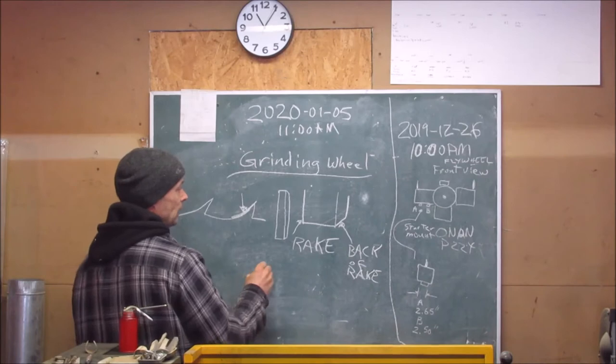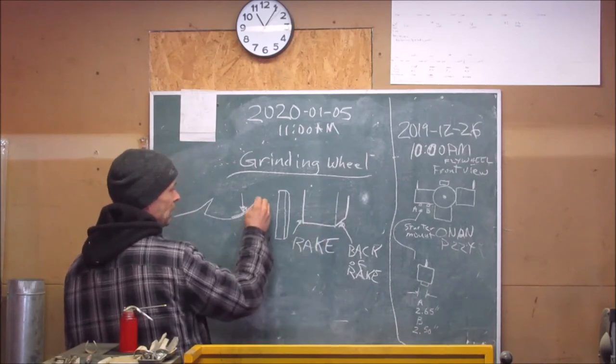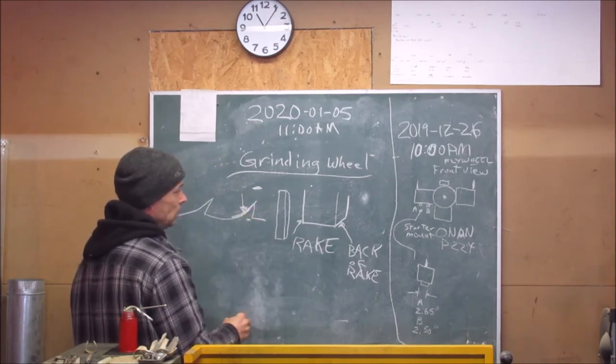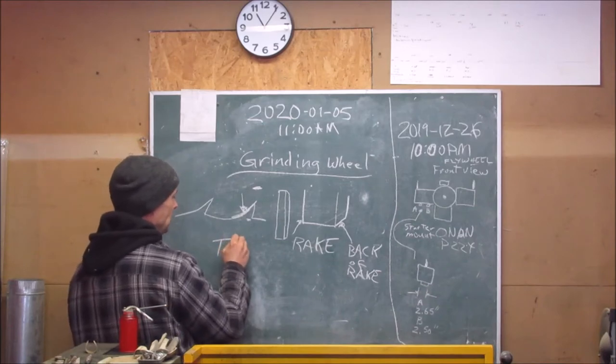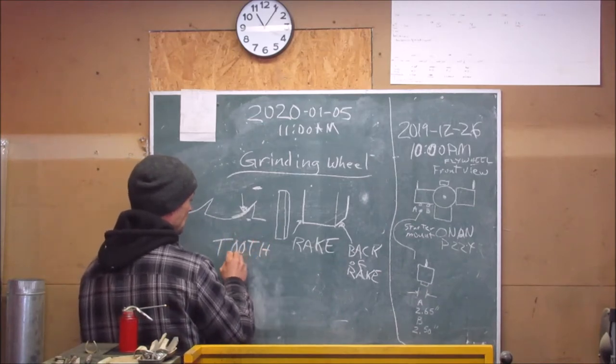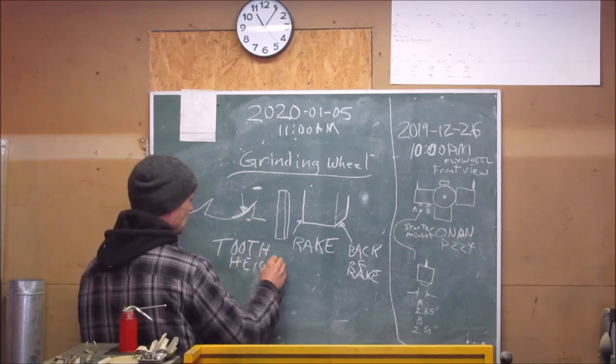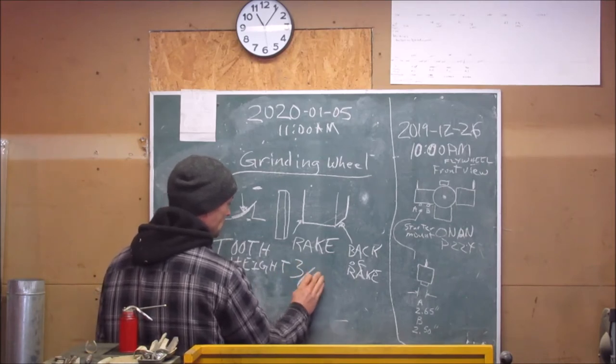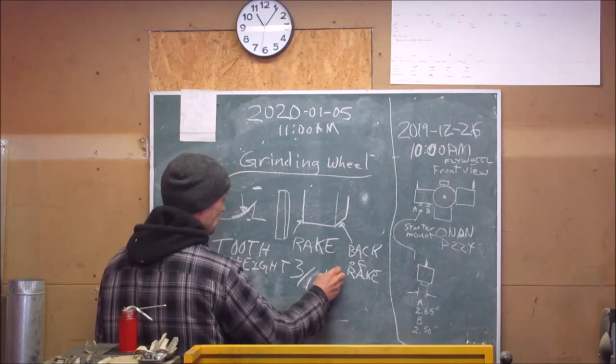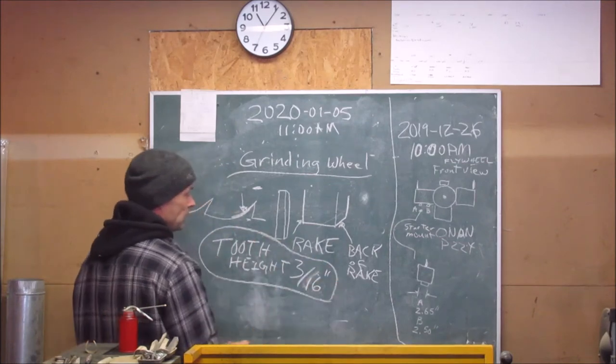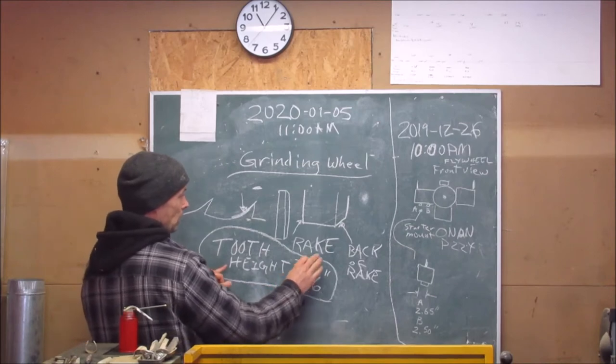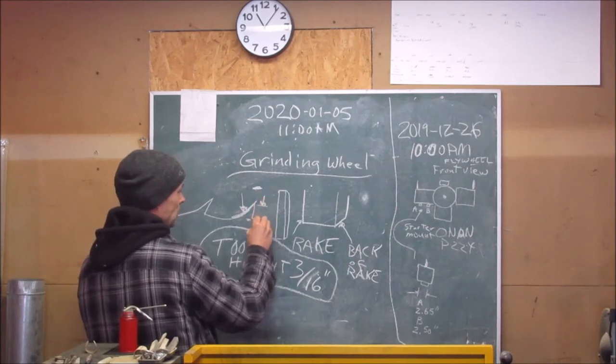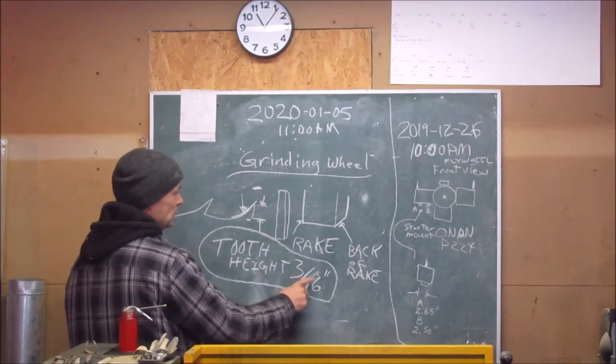Now if I made it larger, I'd be making a tooth that is too high. Tooth height should be three sixteenths of an inch. So you've got to make sure that this is short enough to only leave three sixteenths of an inch.